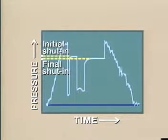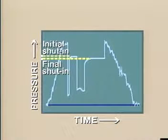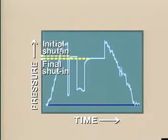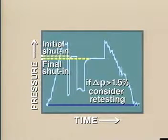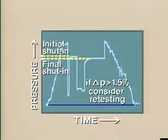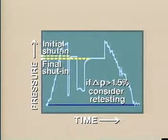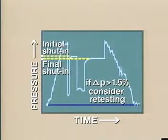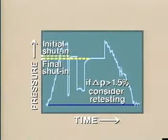We see such an example here. The fluids produced during the flow periods have caused a measurable depletion or drawdown of the reservoir. A pressure change of 1.5 percent or greater is considered serious and retesting may be warranted. A reservoir barrier or nearby production may also cause the same effect, and so some additional analysis may be required.